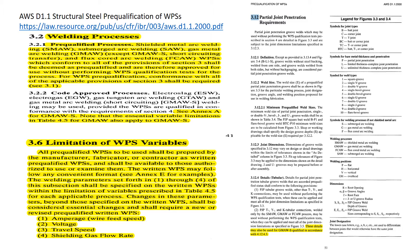Let's have a look at the legend for Figures 3.3 and 3.4 to have a better understanding of the joint designation. Symbols for joint types: B stands for butt joint, C corner joint, T T-joint, and so on. Symbols for base metal thickness and penetration: P is partial joint penetration, L is limited thickness, and U is unlimited thickness.